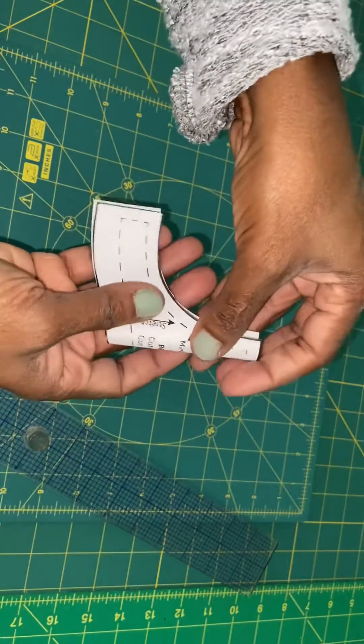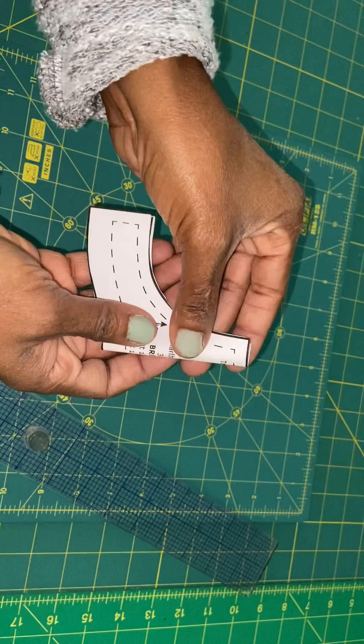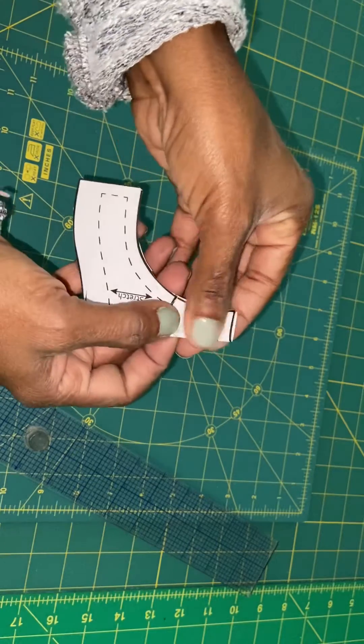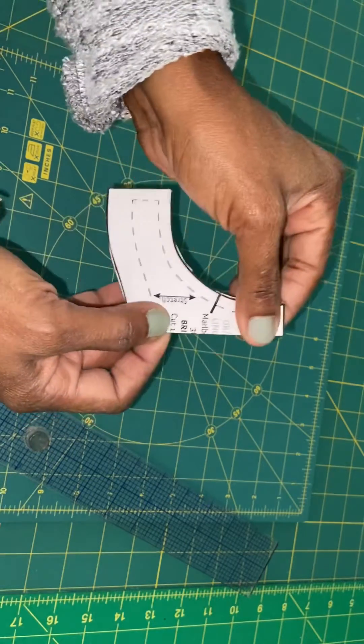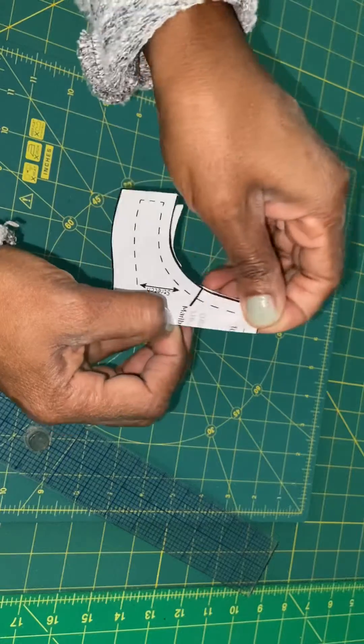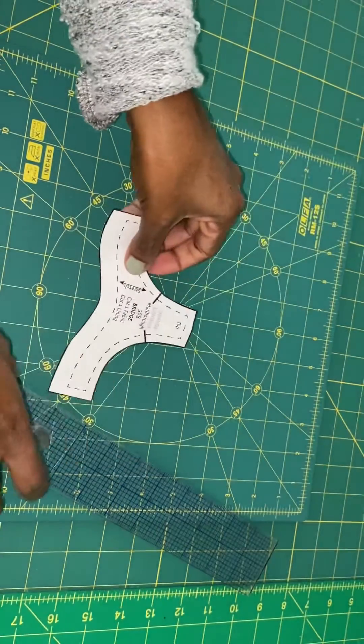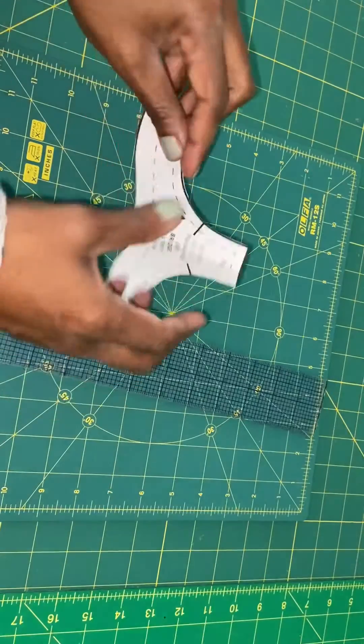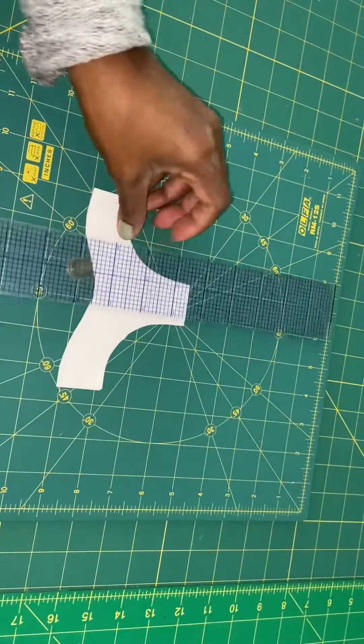Fold it in half just to get a middle. Just fold it in half and then we're going to slash it on that line.